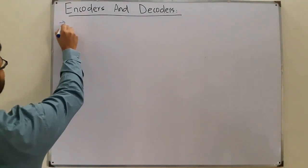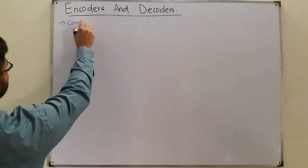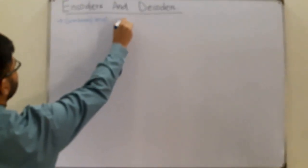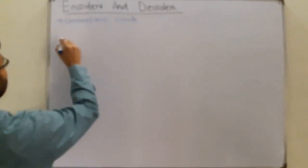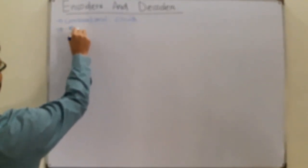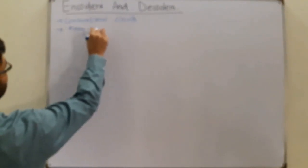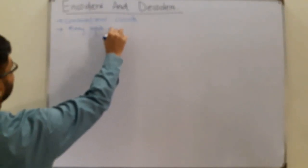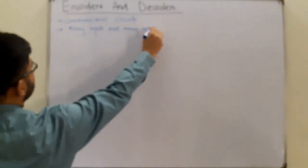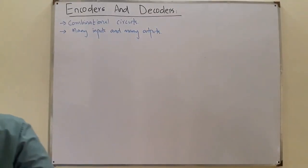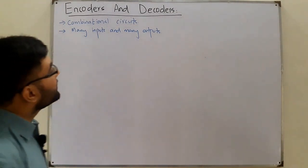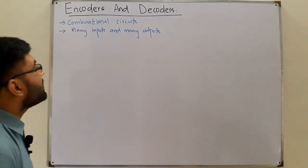These are combinational circuits. Combinational circuits have many inputs and many outputs — by 'many' I mean more than one.